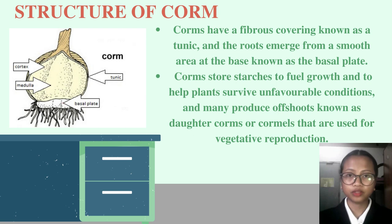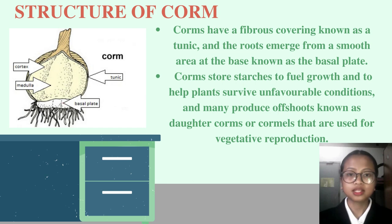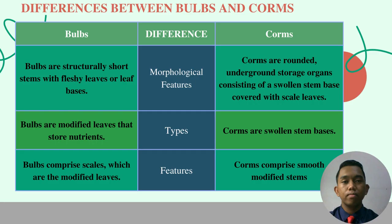Moving to the structure of the corm: there is a cortex, medulla, tunic, and a basal plate. Corms have a fibrous covering known as the tunic, and the roots emerge from a smooth area at the base known as the basal plate. Corms store starch to fuel growth and to help plants survive unfavorable conditions, and many produce offshoots known as daughter corms or cormlets that are used for vegetative reproduction.